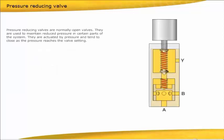Pressure reducing valves are normally open valves. They are used to maintain reduced pressure in certain parts of the system. They are actuated by pressure and tend to close as the pressure reaches the valve setting.